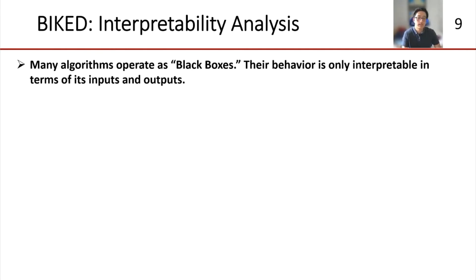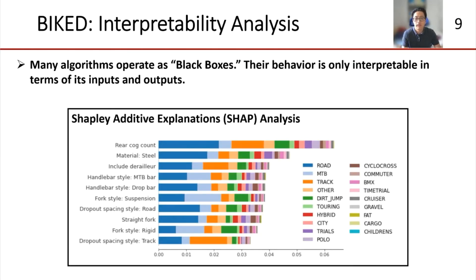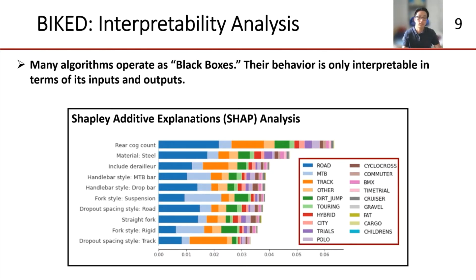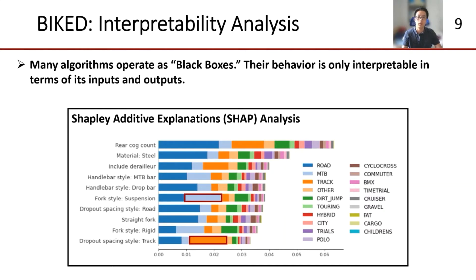While confusion matrices are helpful tools, many classifiers — especially neural network-based ones — operate as black box algorithms; we don't really know how they process the information to make their selections. To address this, we consider a Shapley additive explanations interpretability analysis on the same deep neural network examined with the confusion matrix. This analysis quantifies the contribution that each input value generates in a model's classification decision. This plot includes the top 10 most significant bicycle parameters, shows the magnitude of their contribution, and divides up each parameter's contribution into subcomponents representing individual class prediction probabilities. For example, most designers of a particular class of bike will choose the corresponding class of forks, handlebars, and dropouts. We can also observe that a few features have a particularly large impact on the probability that a bike is classified as a particular class, like track-style dropout spacing for track bikes or suspension forks for mountain bikes.